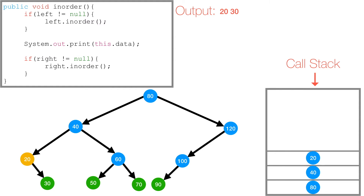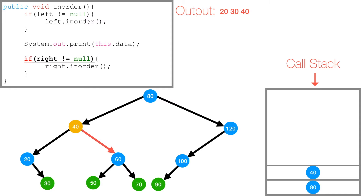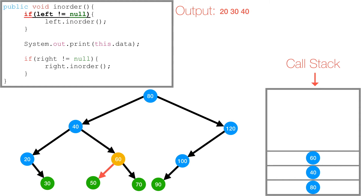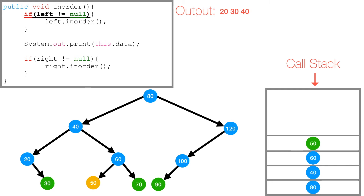We're back at 20. We've checked 20's left subtree and explored 20's right subtree, so 20 is popped off the call stack and we're back at 40. We've explored 40's left subtree containing 20 and 30. So now we print 40. Then we check if 40's right subtree is not null — it's not — so we call in-order on 40's right subtree. 60 is pushed to the call stack. We check if 60's left is not null — it's not — so we call in-order on 60's left subtree.